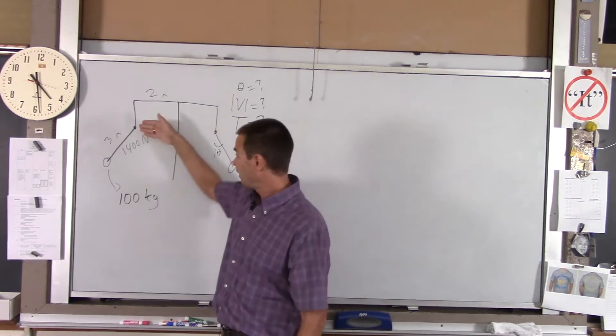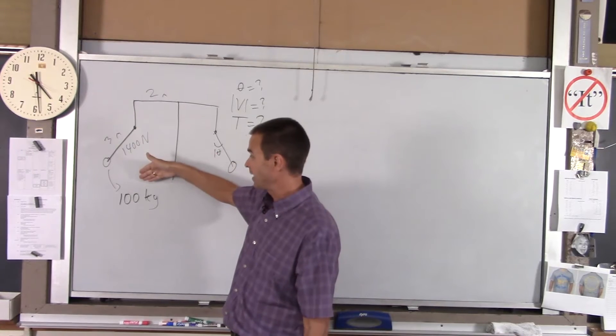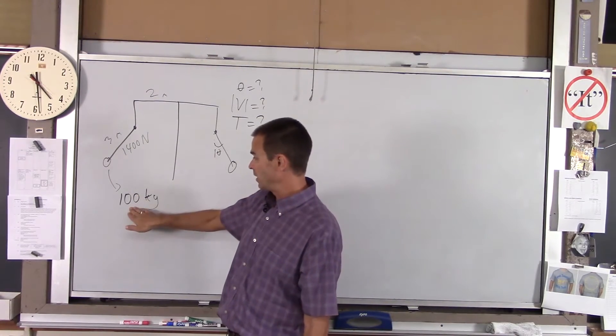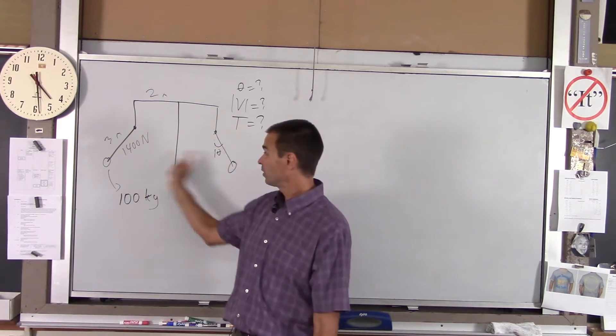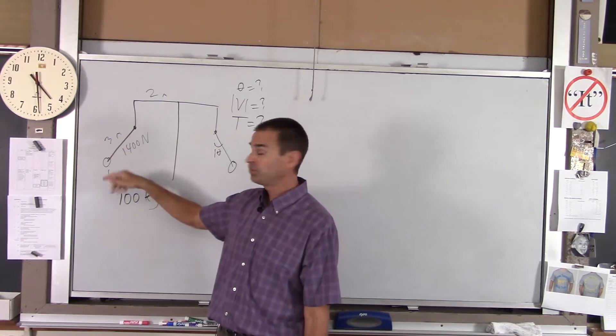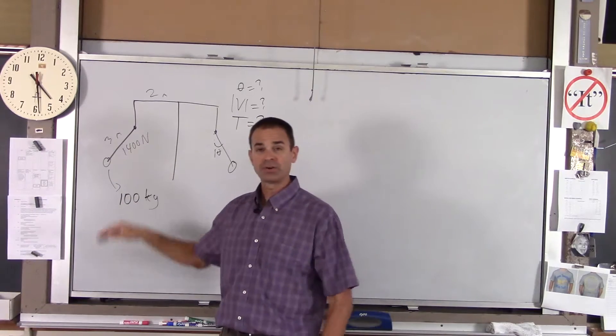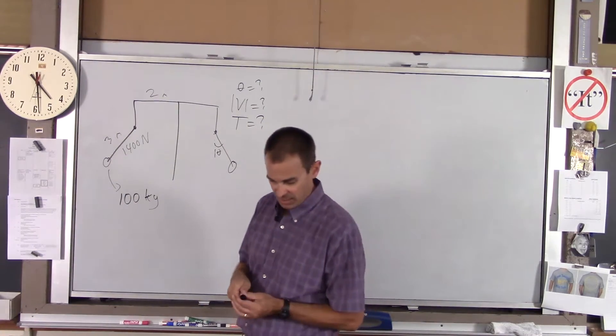Just on a side note, if this thing were not moving at all and this person were just hanging, their weight would be 100 times 9.8, which is 980 newtons. So the tension would be 980. As soon as we start going in a circle, this tension starts to increase. At the moment it reaches 1400, I want that information.